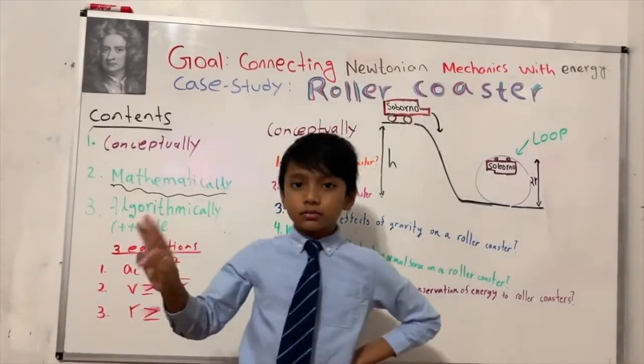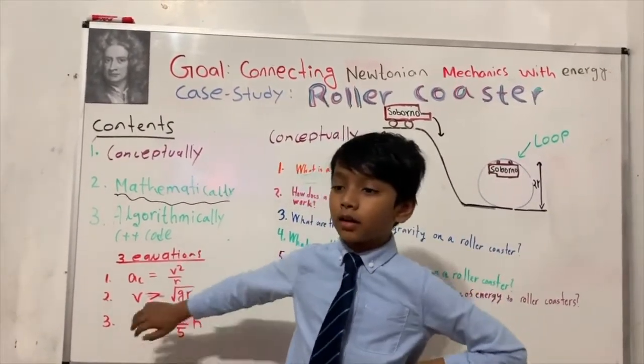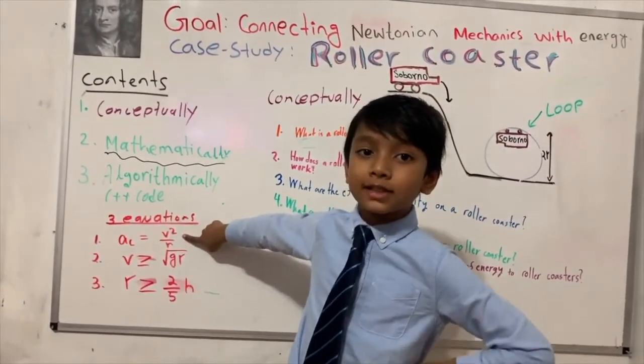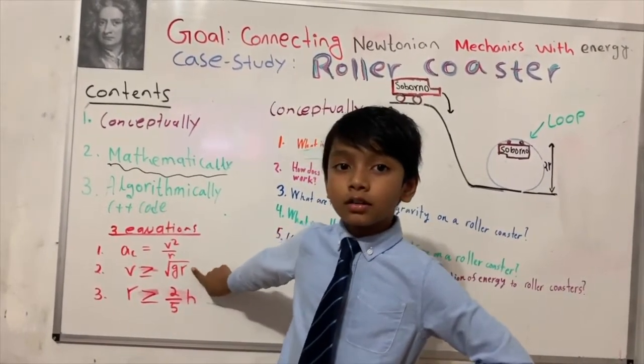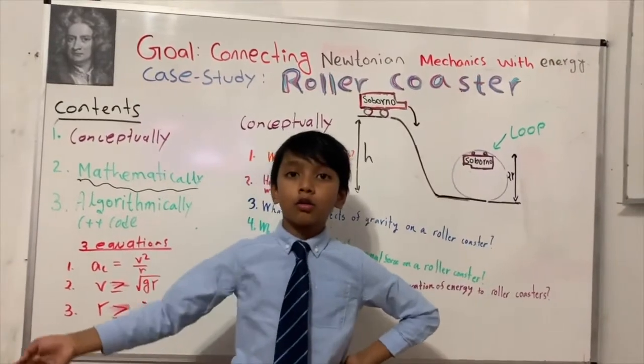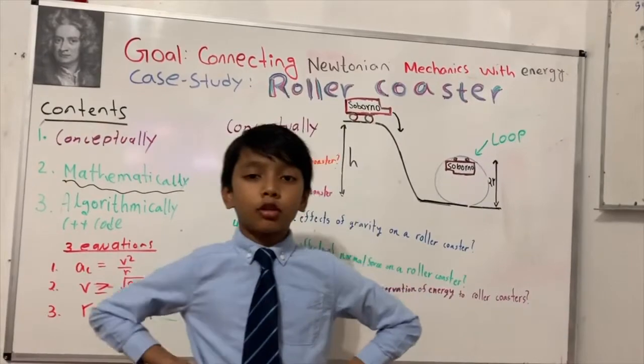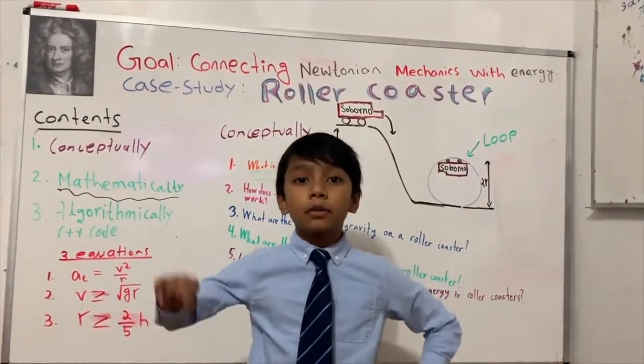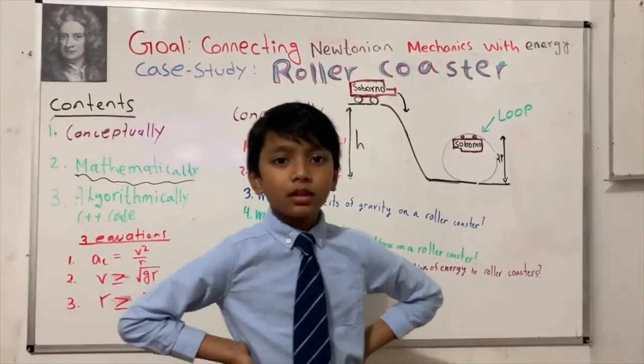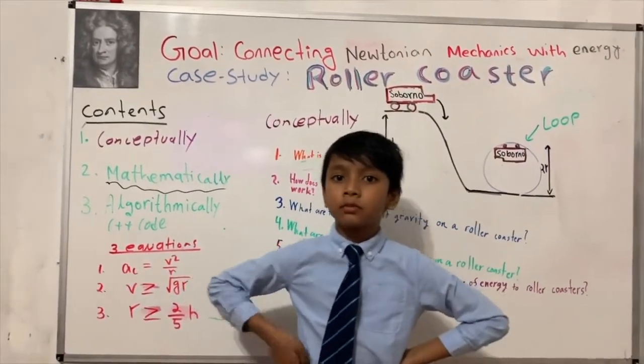Now let's move. Now, there are three red equations here beside me. And let's now meet these three red equations with me. Number one, the centripetal acceleration is equal to V squared over radius. Number two, the velocity has to be greater than or equal to the square root of GR. Otherwise, you'd either stop at the bottom or you'd fall at the top, which nobody wants. And the radius has to be greater than or equal to the height of the slope divided by five. Now, otherwise, the same thing would happen. Your potential, the kinetic energy would decrease, and you would fall from the top or stop at the bottom.